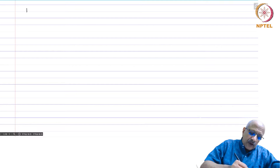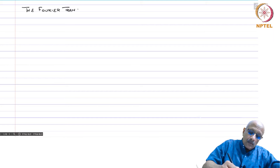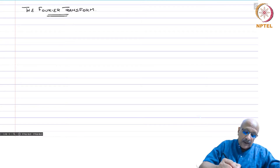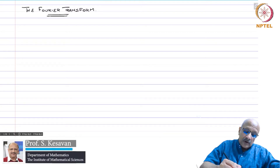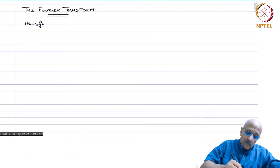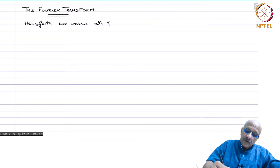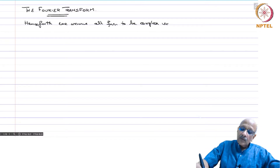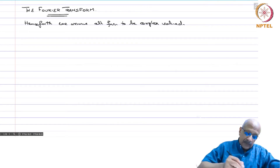We will now discuss the Fourier transform. We will first discuss this for L1 functions on Rn and then see how we can extend this to certain classes of distributions. We cannot do it for all distributions, but there is a certain class where we can. Henceforth, we assume all functions to be complex-valued. The Fourier transform is particularly adapted for complex-valued functions.